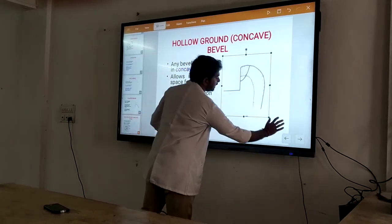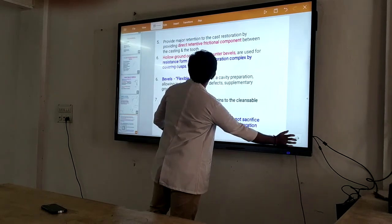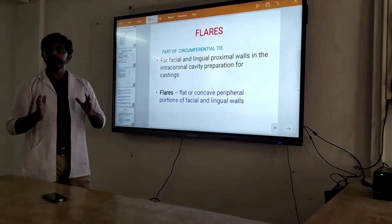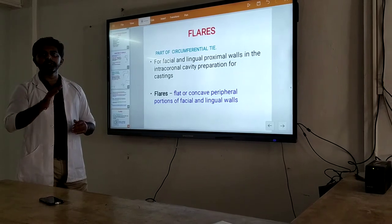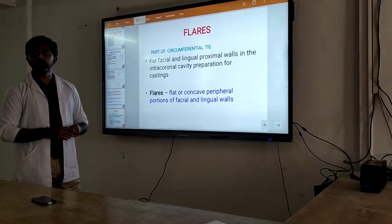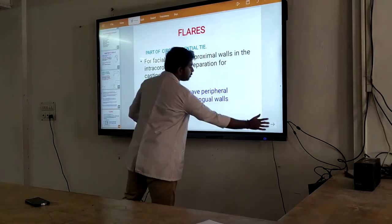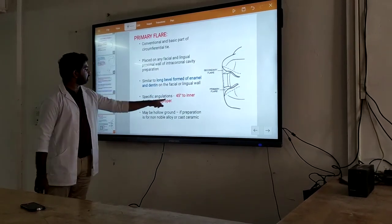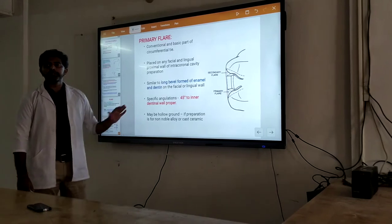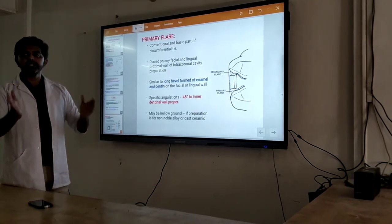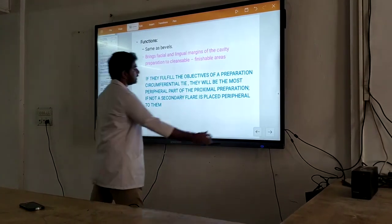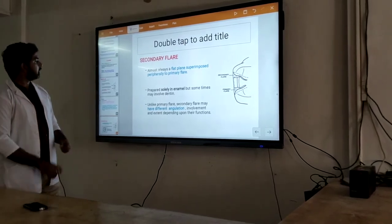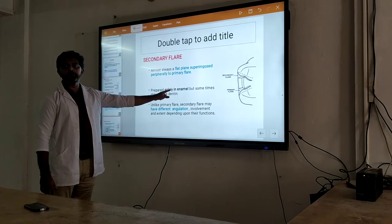Now we are coming to the last part, which is known as flares. A flare is also a part of ceramic finishing. The difference between flare and bevel: both are similar, but the bevel is given on the occlusal surface, and when it extends into the proximal surface, that is known as a flare. There are two types of flare. First is known as primary flare — this is the main flare, given at 45 degrees within the inner surface. Usually we allow compression in our primary flare, but in some cases there may be some excess, so we put in a secondary flare. Over the primary flare we give one more flare — that is known as the secondary flare. This flare is given only in certain cases.